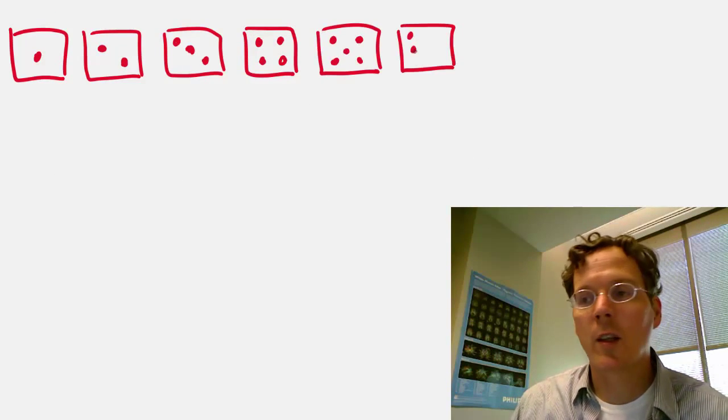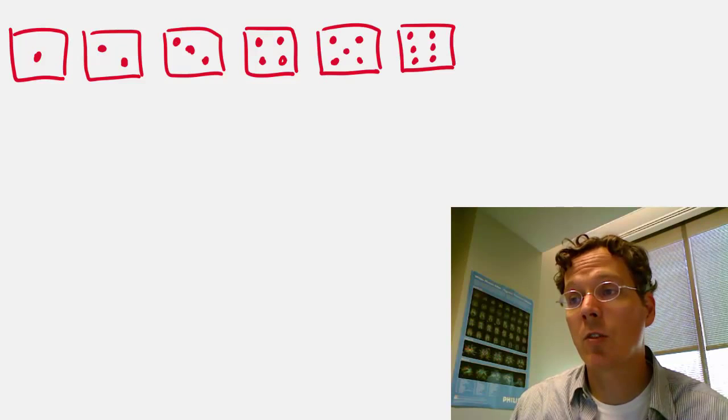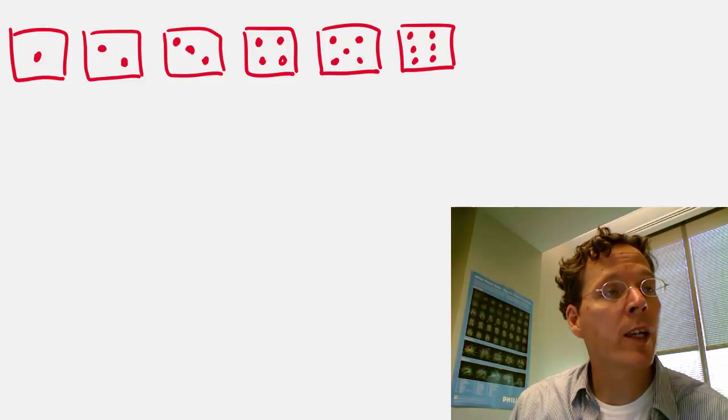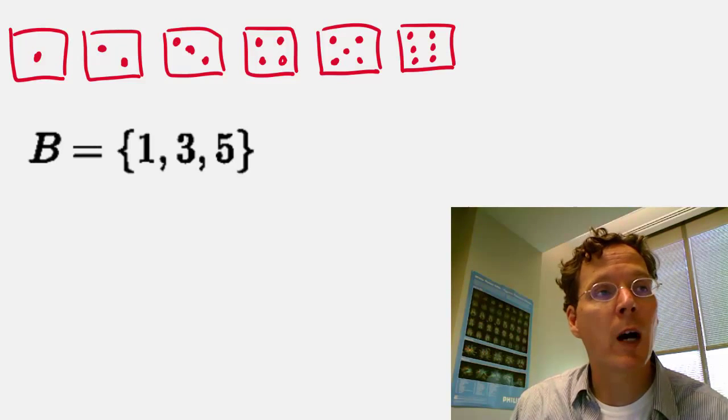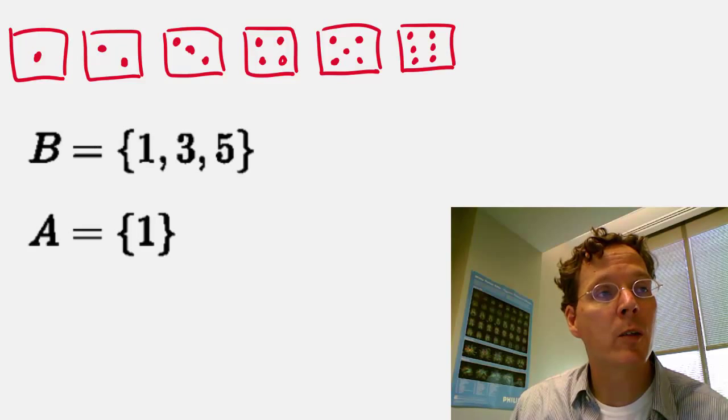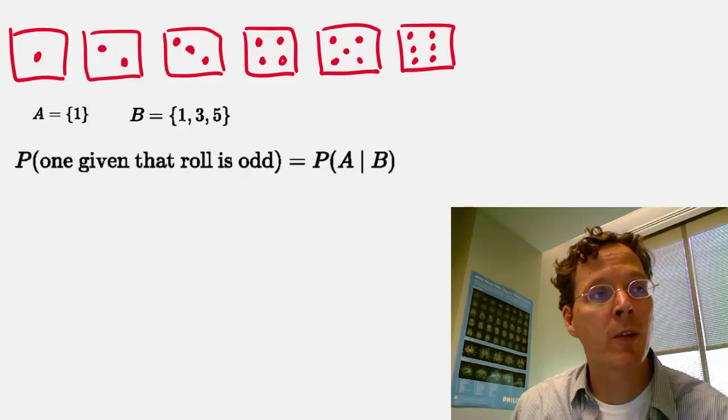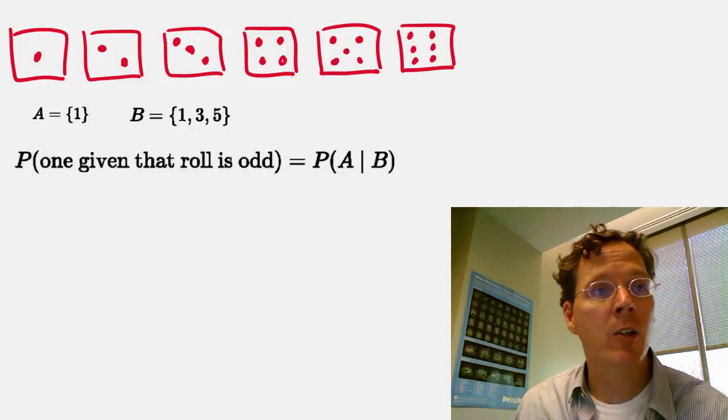So let's just check that conditional probability gives us the answer that we know to be true in the die rolling case. In our case, B was the event 1, 3, 5, and A was the event 1. We want the probability of the event A, conditional on the event 1, 3, or 5, having occurred.